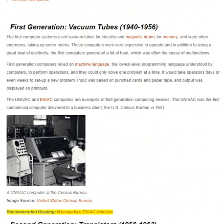First generation — vacuum tubes, 1940 to 1956. The first computer systems used vacuum tubes for circuitry and magnetic drums for memory, and were often enormous, taking up entire rooms. These computers were very expensive to operate, and in addition to using a great deal of electricity, the first computers generated a lot of heat, which was often the cause of malfunctions.